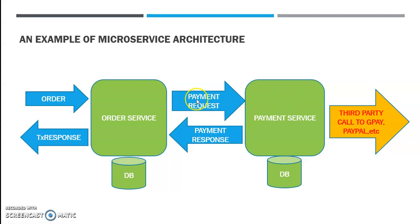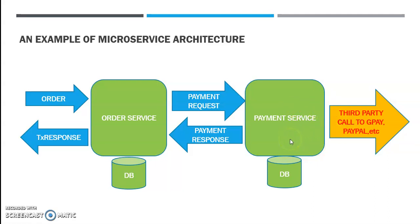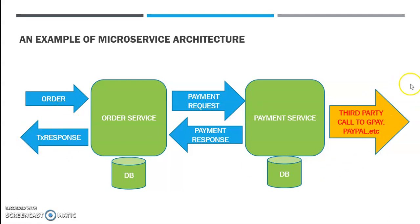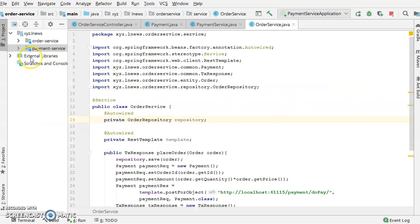In return, a payment response will be sent from the payment service to the order service. While sending this, all the details of the order will also be present in that payment, and the same will be persisted in the payment service DB. The status of the order depends on whether it's a third-party call to GPay, PayPal, or any other payment vendor. The payment response is sent to the order service, which generates a transaction response comprising details of both payment and order, which is then sent to the front-end customer.